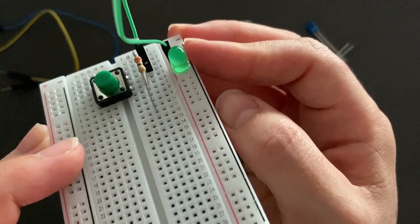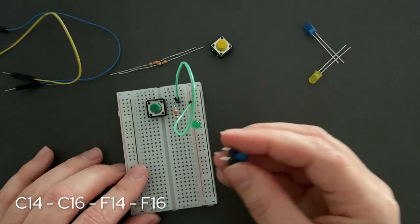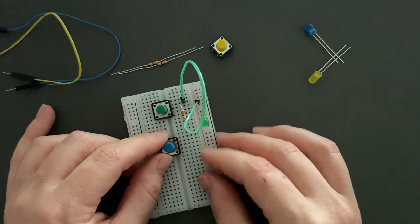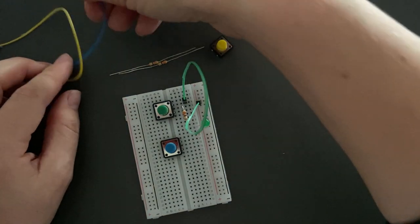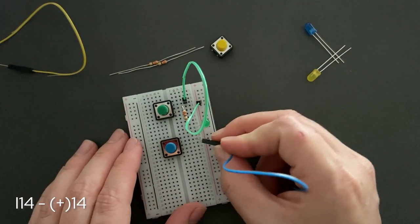Let's go for the second push button. Let's place it so that the pins align with C14, C16, F14, and F16. And then gently press into place. Connect the jumper wire from I14 to positive power rail 14.